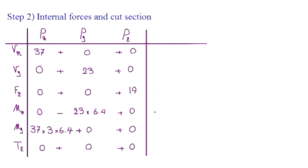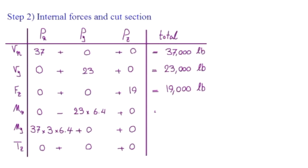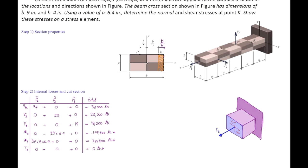Overall, the total shear force along the x-axis is 37 kips, or 37,000 pounds. The total shear force along y is 23 kips. The total axial force is 19 kips. The moment about the y-axis is negative 147.2 kip-inches, and the moment about the y-axis is 710.4 kip-inches. The overall torque is zero. Any questions about determining the forces at that cut section?